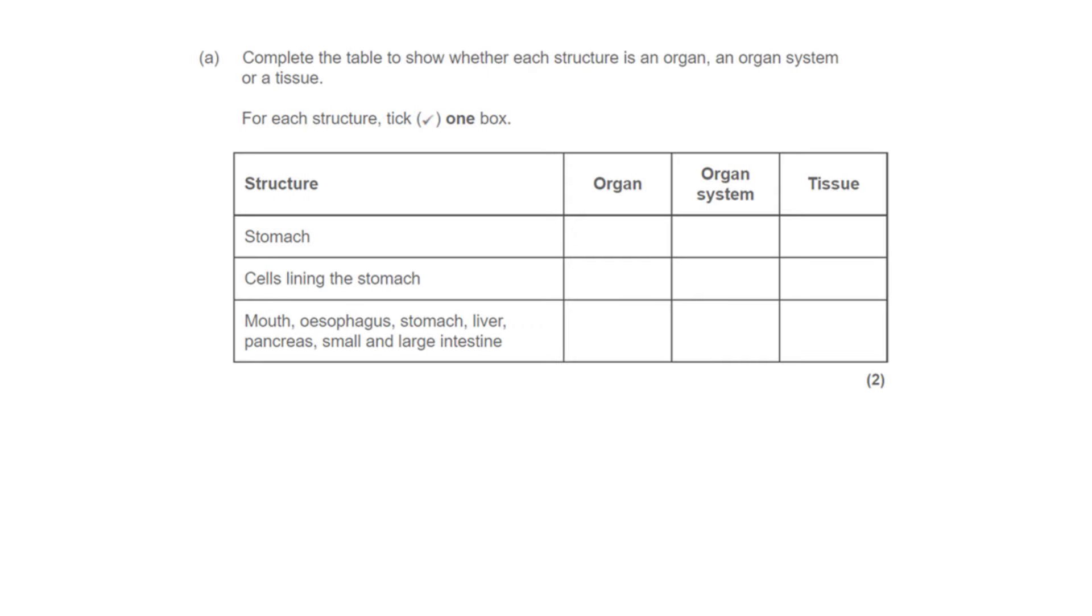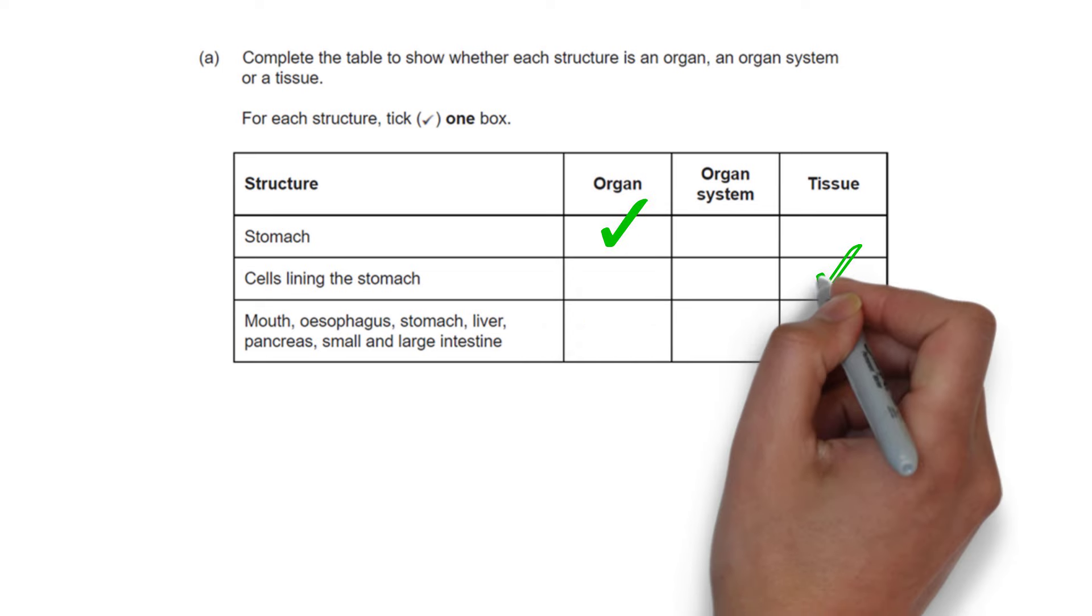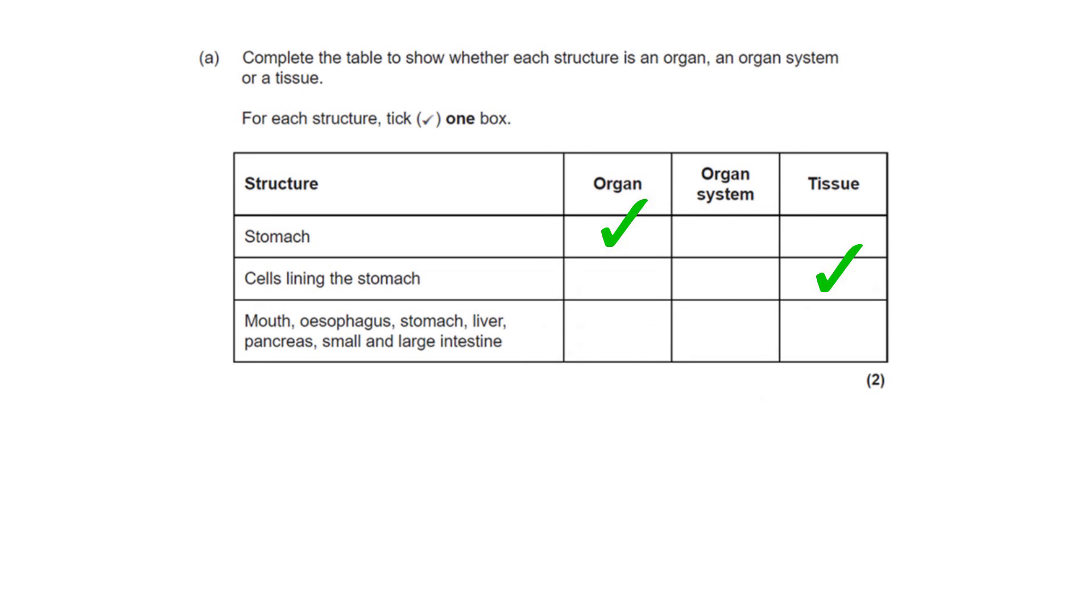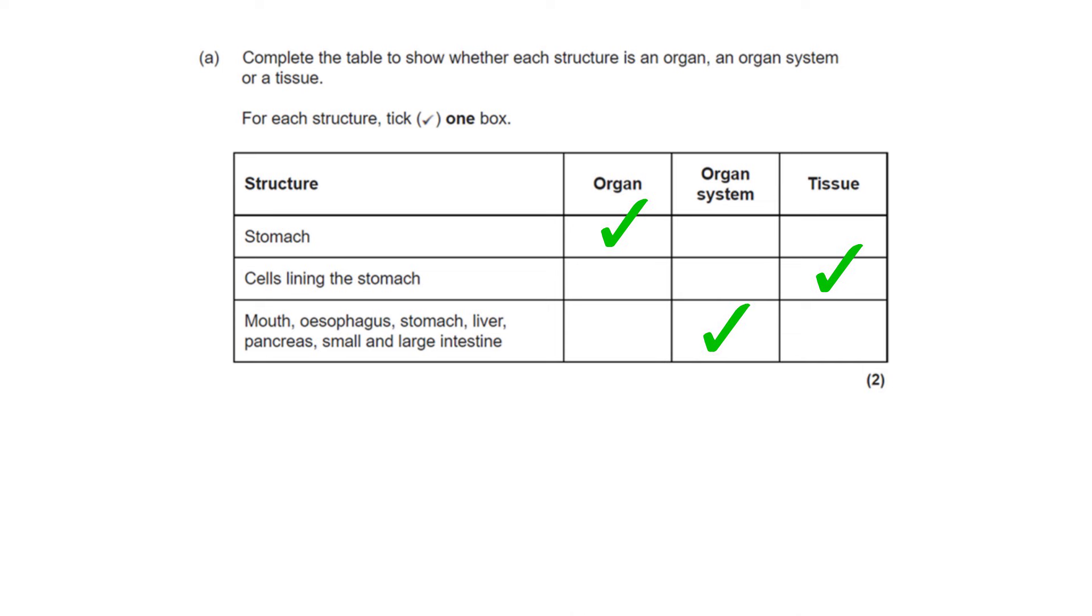The next question again is talking about organization. We need to be able to categorize three different structures. The stomach is an organ, the cells lining the stomach is a tissue and the mouth, esophagus, stomach etc. must be an organ system because that is a group of organs. The organ system they belong to is the digestive system.